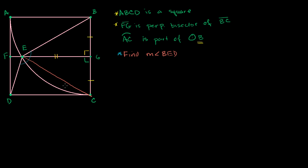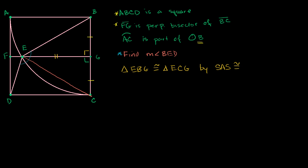You have a 90-degree angle here and a 90-degree angle there. So by side-angle-side, these two triangles are congruent. Triangle EBG is congruent to triangle ECG by side-angle-side congruency. That also tells us that all corresponding angles and sides are equal, so EC is equal to EB.